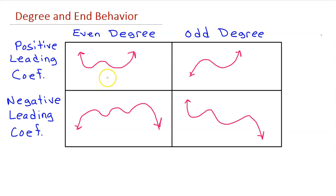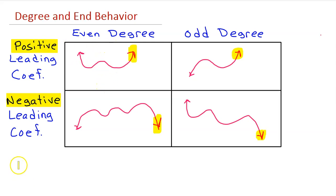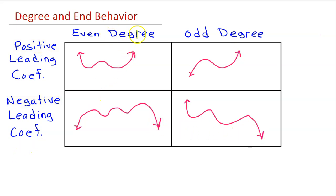Here's a quick side lesson on the end behavior of polynomial functions. The sign of the leading coefficient always matches the end behavior on the right. If the leading coefficient is positive, the polynomial is approaching positive infinity on the right. If the leading coefficient is negative, the polynomial will be approaching negative infinity on the right. The degree of the polynomial will allow you to determine the end behavior on the left. If the degree is even, the end behavior on the left will match the end behavior on the right — like positive infinity and positive infinity, or negative infinity and negative infinity.